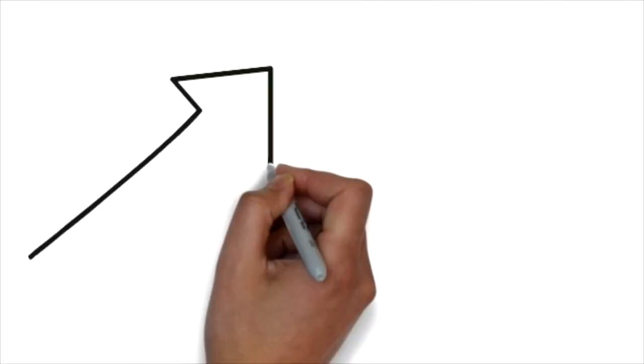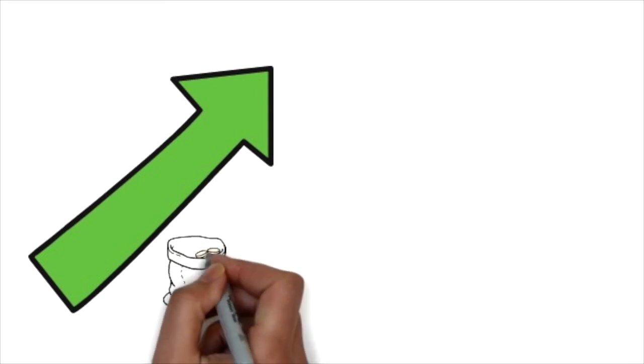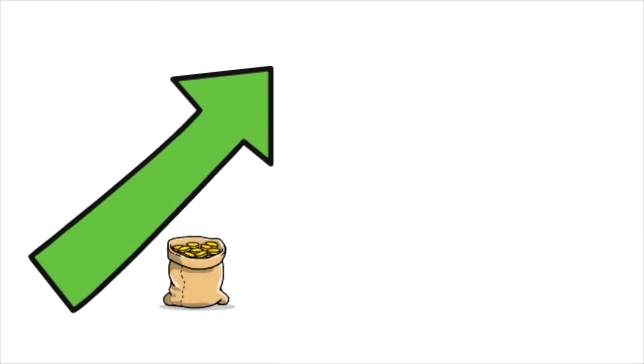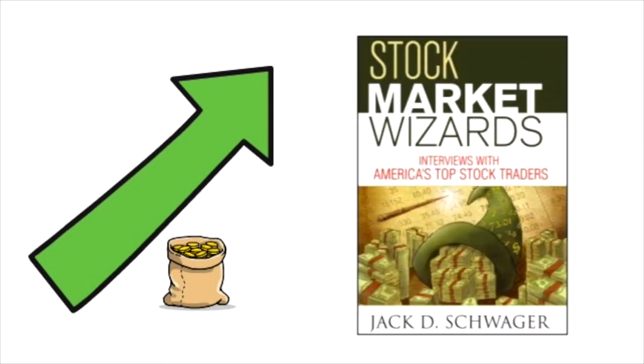The very next year, he turned $55,000 into over $1 million by buying call options on the indexes, which would later skyrocket in value. You can read more about Mark Cook and his story in the book Stock Market Wizards.